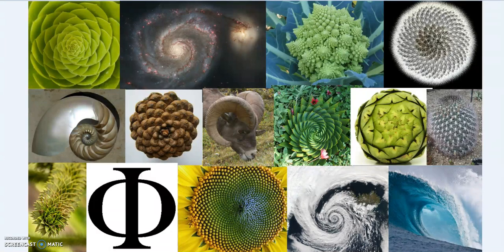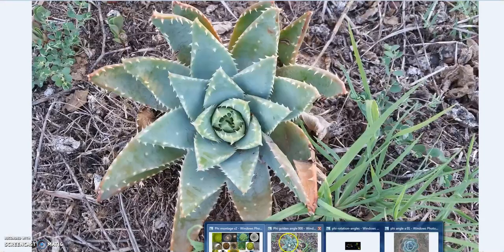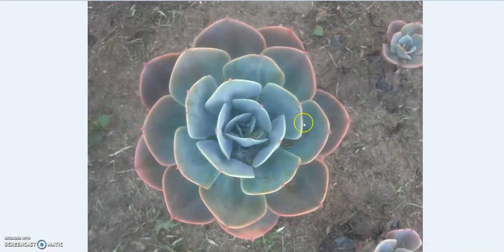Even though it's mathematically verifiable, it's literally all over the place. Throughout nature, from the macro to the micro, from the biggest to the smallest, these spirals define nature and growth cycles. That's the symbol for phi. Let's begin by looking at how it applies in plants.